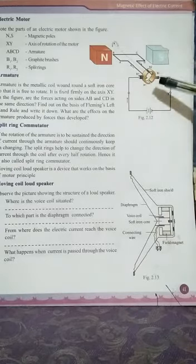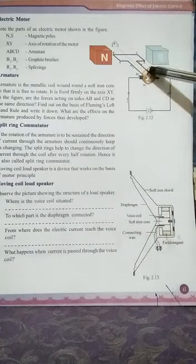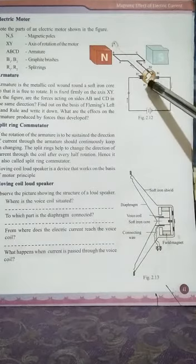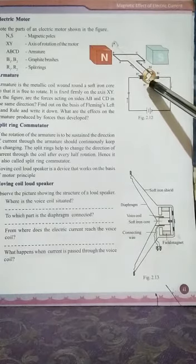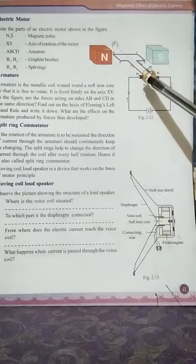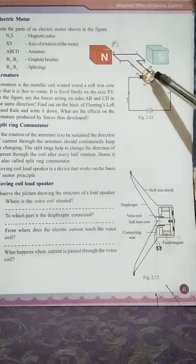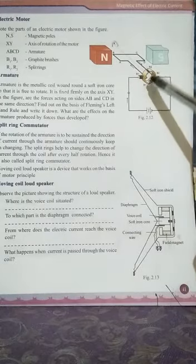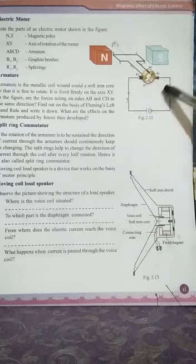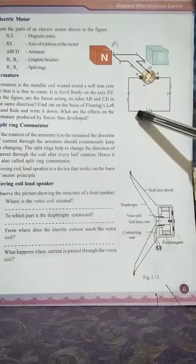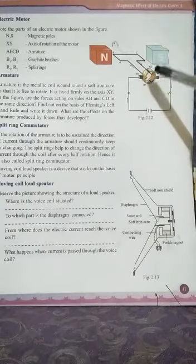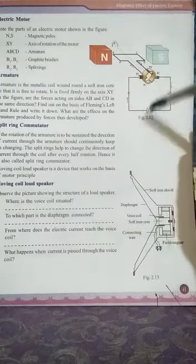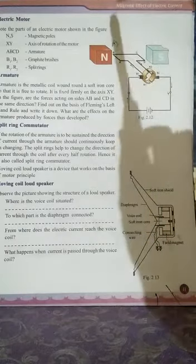The split rings change the direction of current every half rotation. Any device that changes the direction of current is called a commutator. So the split rings in the electric motor function as a commutator — reversing the direction of current. That is the function of the split rings in the electric motor.